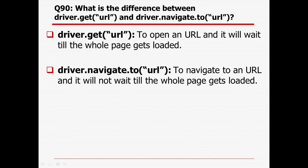What is the difference between driver.get(URL) and driver.navigate().to(URL)? driver.get(URL) is used to open any URL and will wait until the whole page is loaded. But using driver.navigate().to(URL), we can navigate to another URL, but it will not wait until the whole page gets loaded. That is the basic difference.